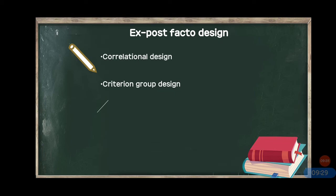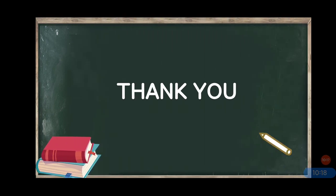On that basis, we interview their family members for high scorers and do the same for low scorers. We compare the high divergent thinking group with the low divergent thinking group through criteria. It is called criterion group design because we are getting to know the cause — what causes the particular state or condition, here divergent thinking — by contrasting the characteristics of the group which possesses the criterion behavior with those who do not. Both exposed factor design types fall under this category.